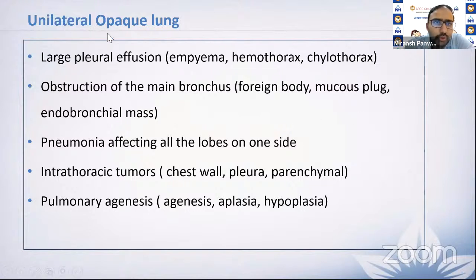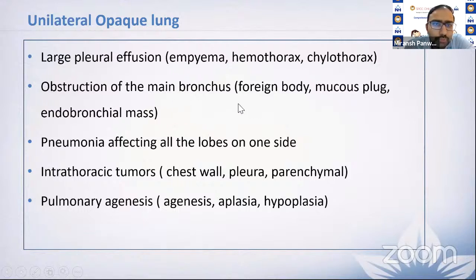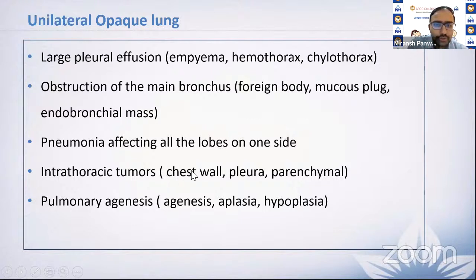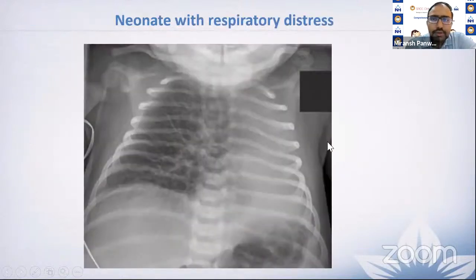Now moving forward to unilateral opaque lungs: causes include large pleural effusion due to empyema, hemothorax, or chylothorax; obstruction of the main bronchus from foreign body, mucus plug, or endobronchial lesion; pneumonia affecting the entire lobe on one side; larger tumors of the chest wall, pleura, or parenchyma; and pulmonary agenesis.